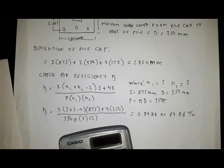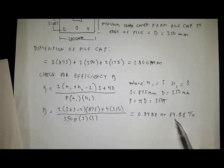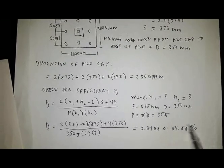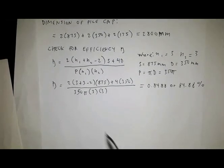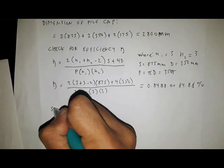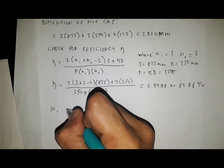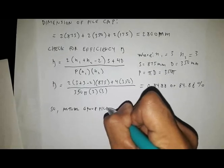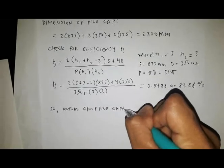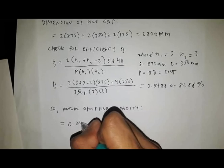So we have an efficiency of 0.8488 or 84.88 percent. Meaning to say, the efficiency is the percentage of the allowable axial load capacity that can be used for this group piles.